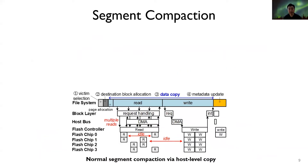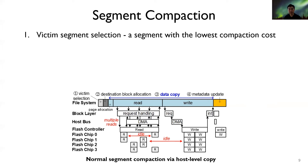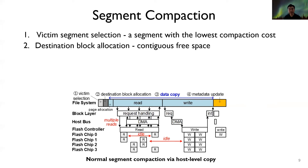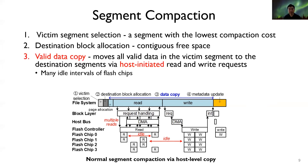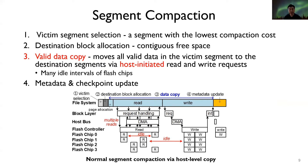Let's consider the segment compaction overhead of log-structured file systems. The overall process of normal LFS segment compaction consists of four tasks. Victim selection finds the segment with the lowest compaction cost. Block allocation allocates contiguous free space in the destination segment. The data copy task moves all valid data in the victim segment to the destination segment via host-initiated read and write requests, which generates significant data transfer traffic between the host and storage and cannot fully utilize internal flash-chip parallelism. Finally, the file system writes several modified metadata blocks to storage to reflect changes in data location, then writes a checkpoint block.